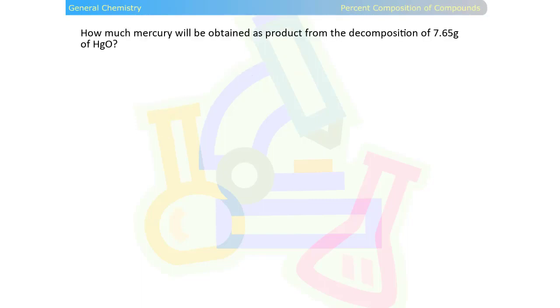How much mercury will be obtained as product from the decomposition of 7.65 grams of mercury oxide? Watch as we perform the calculations.